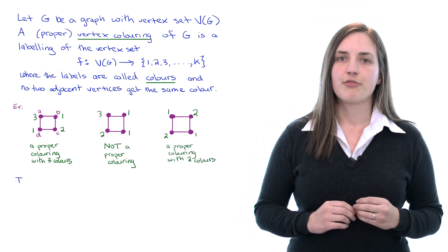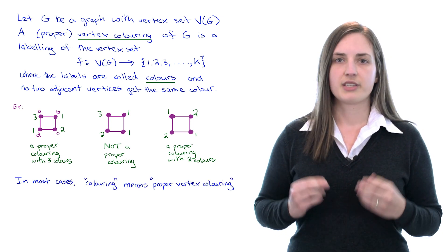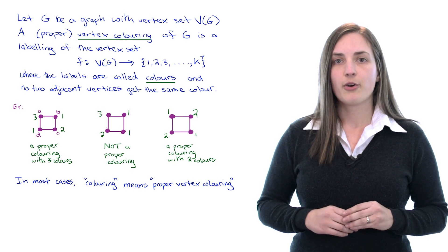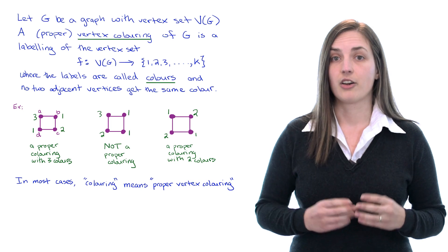When working in graph theory the word coloring is used to mean proper vertex coloring in most cases. So in this video I'm going to drop the words proper vertex and just refer to these things as colorings.